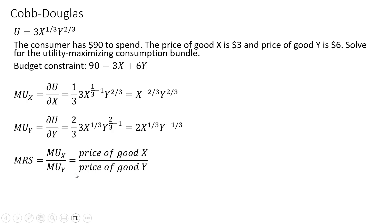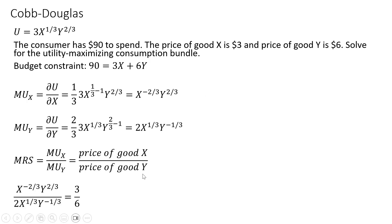The next step is to form the utility maximizing condition, where the marginal rate of substitution — given as the marginal utility of good X divided by the marginal utility of good Y — equals the ratio of the price of good X to the price of good Y. Now we're going to make our substitutions into this formula. We have the marginal utility of good X and good Y, and we know the prices of each good, so let's substitute.